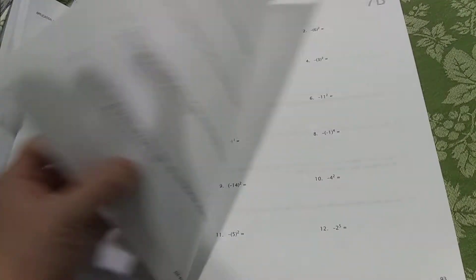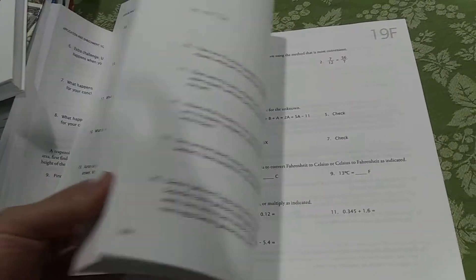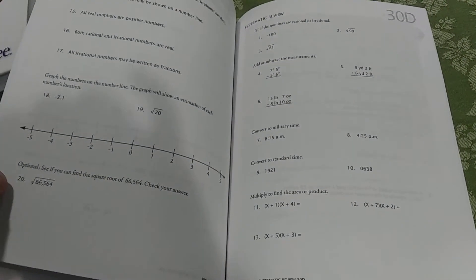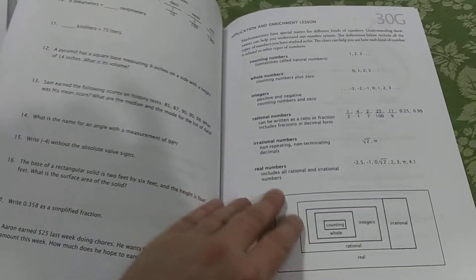And we school all summer long. We take breaks whenever we feel like it and we can get through two Math-U-See books in a year and a half instead of two years. And this is the end of the book.